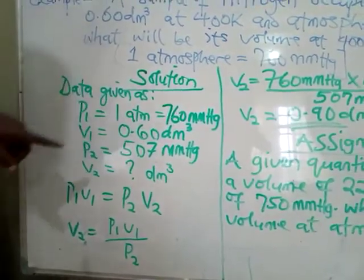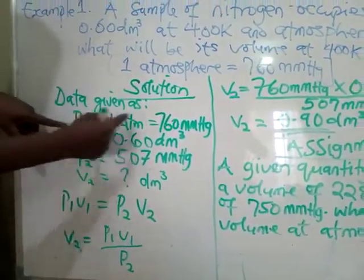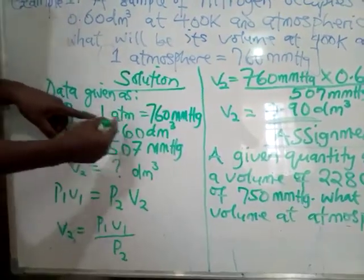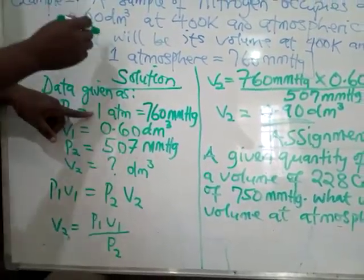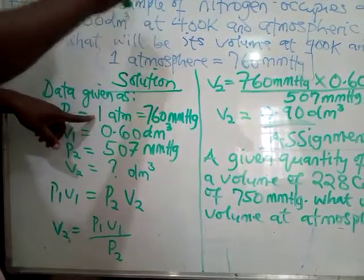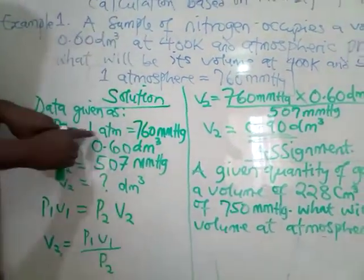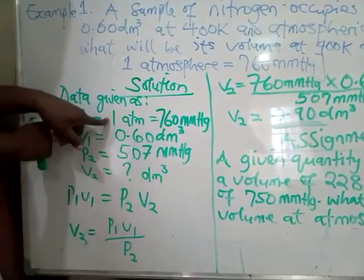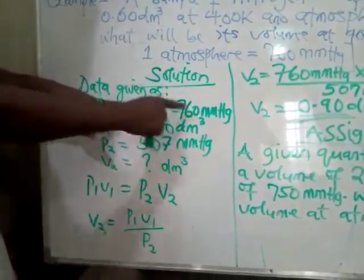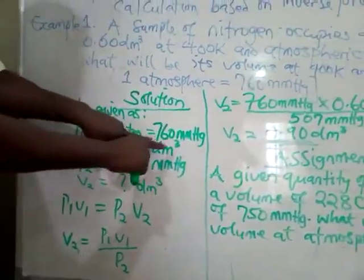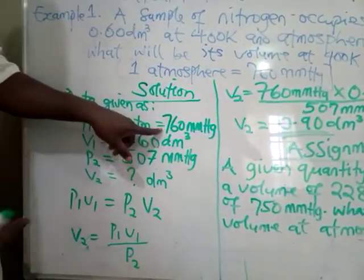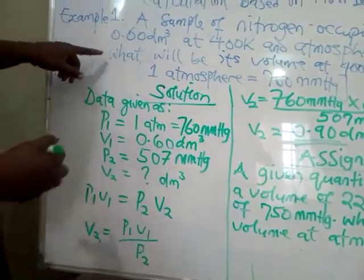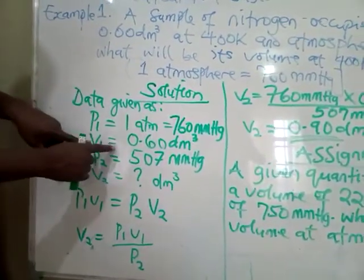Where millimeter mercury or atm is applicable will determine the value of P2. If P2 is given in atm, take one atm as P1; but if P2 is given in millimeter mercury, then take 760 millimeter mercury as P1. In this question, P2 is in millimeter mercury, so P1 = 760 mmHg. Now, V1 = 0.60 dm³.